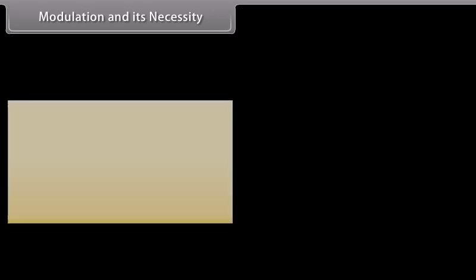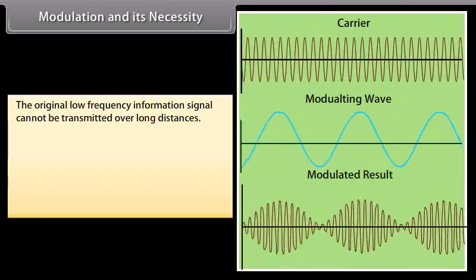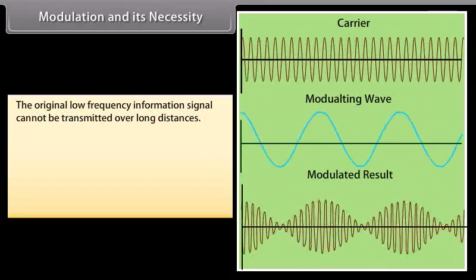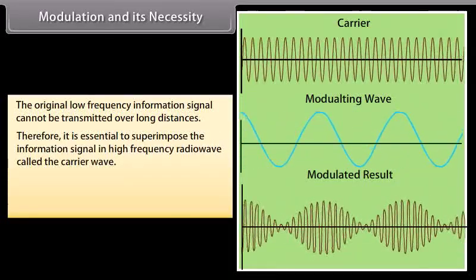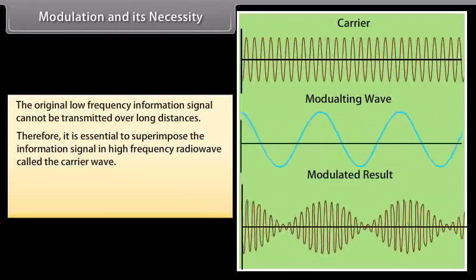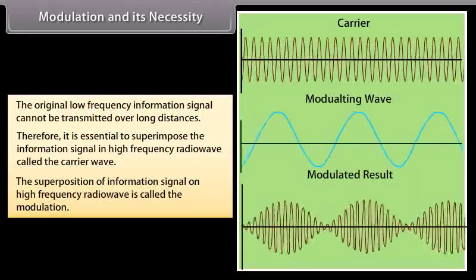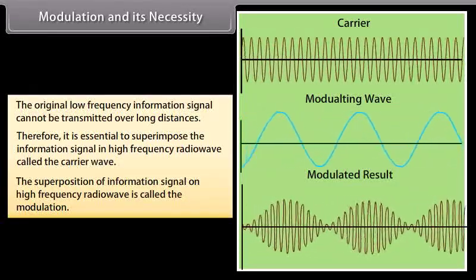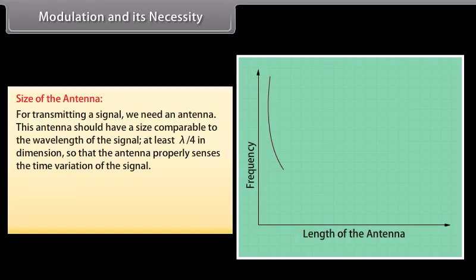The original low frequency information signal cannot be transmitted over long distances. Therefore, it is essential to superimpose the information signal on a high frequency radio wave called the carrier wave. This superposition of the information signal on a high frequency radio wave is called modulation.